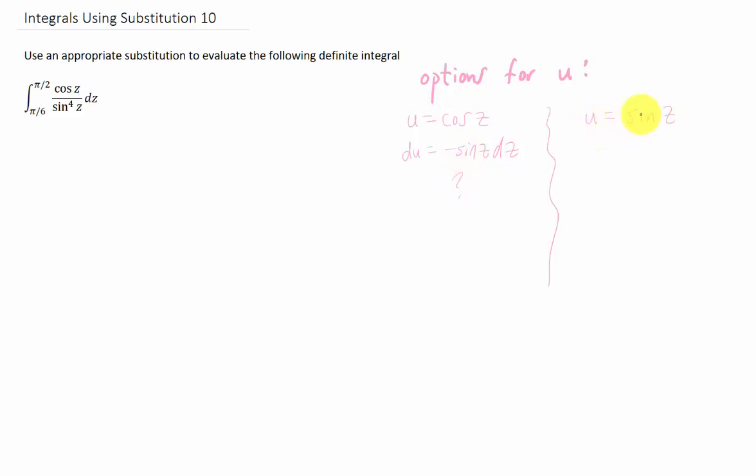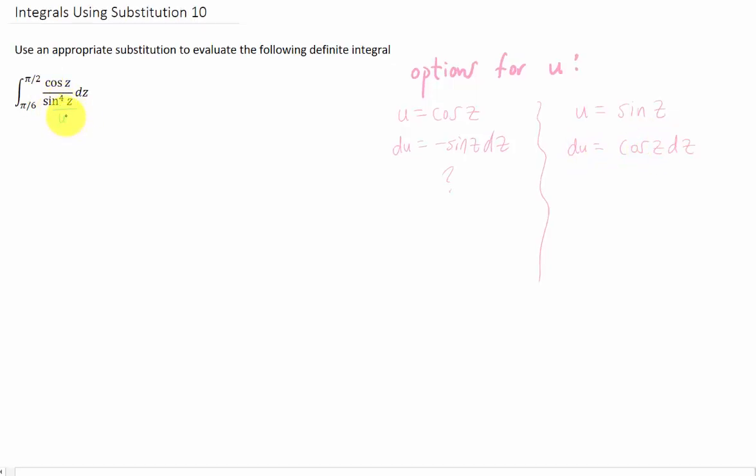If we choose u as sine of z, then our du is going to be cosine of z dz. And then you'll notice that we have a u to the fourth down in our denominator, and this cosine of z dz is just a du up in our numerator. I think that's a pretty good option. I think we can forget about that one.